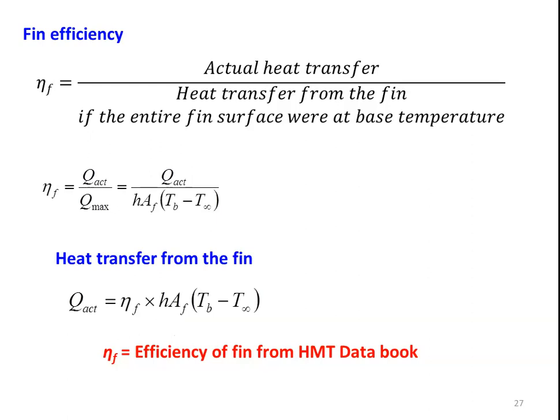The term fin efficiency is defined as actual heat transfer divided by heat transfer from the fin if the entire fin surface were at base temperature. So efficiency of the fin equal to Q actual by Q maximum, where Q maximum equal to h into AF into TB minus T infinity, and AF is the total area of the fin surface. Once you know the fin efficiency eta F — taken from the graph in the data book — you can calculate actual heat transfer as eta F into h into AF into TB minus T infinity.